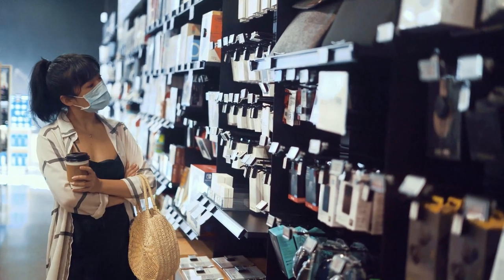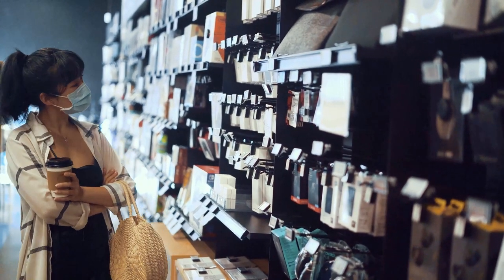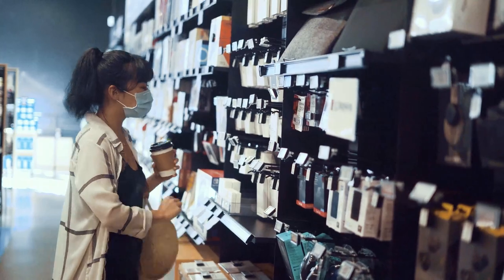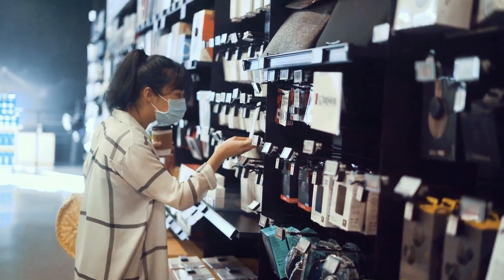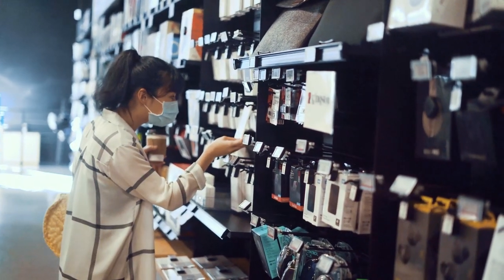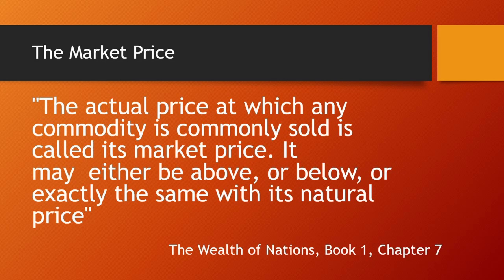Goods are not usually sold at their natural price, though. The actual price at which any commodity is commonly sold is called its market price. It may either be above, below, or exactly the same as its natural price.